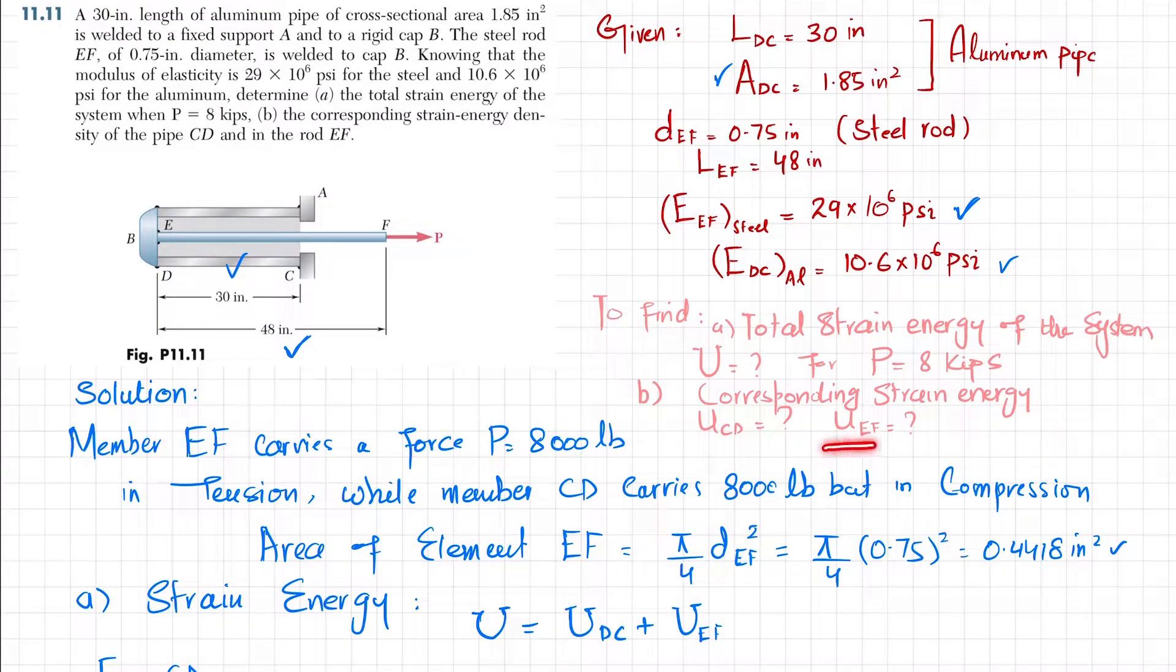Let's start with the solution. You can see at point E we have a load of P, so EF is in tension. Due to this tension, there will be a load on this aluminum pipe, which will be in compression. Remember, EF is experiencing a load of P due to this load in tension.